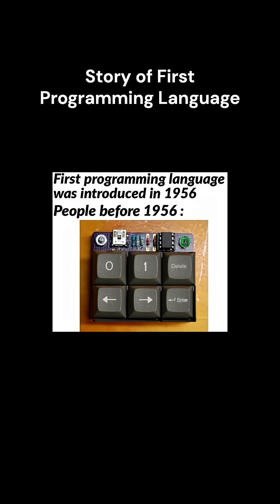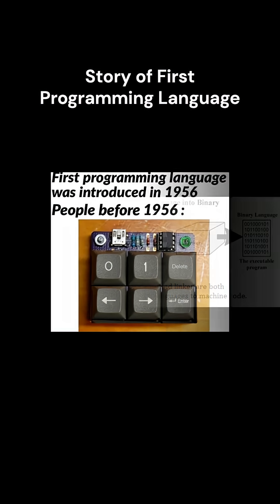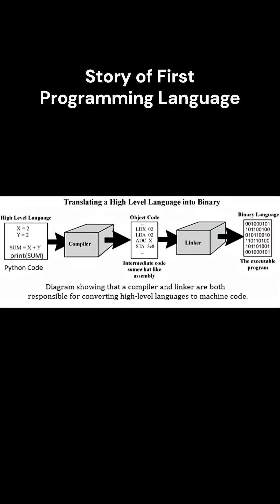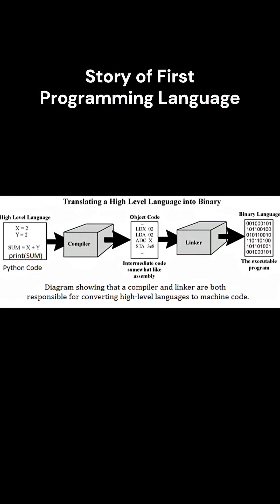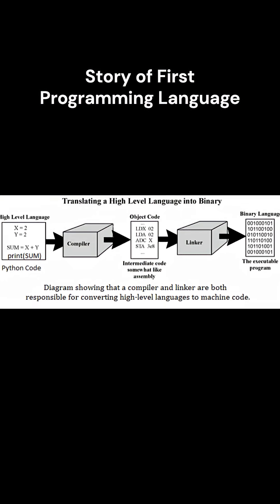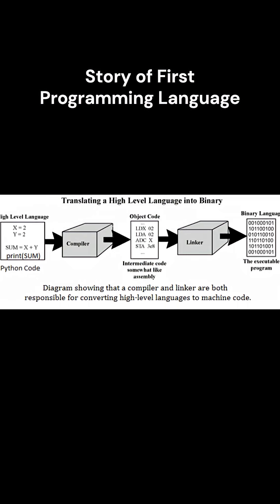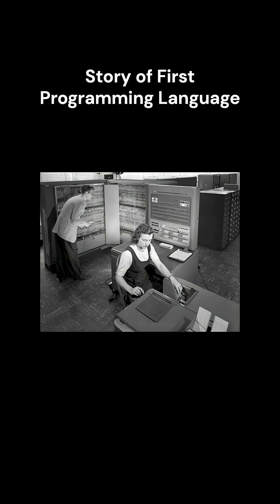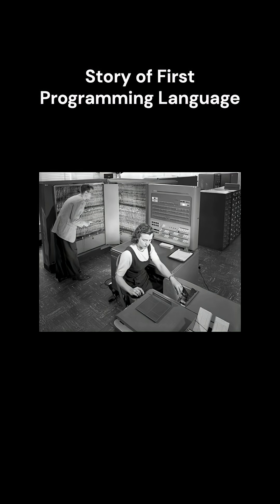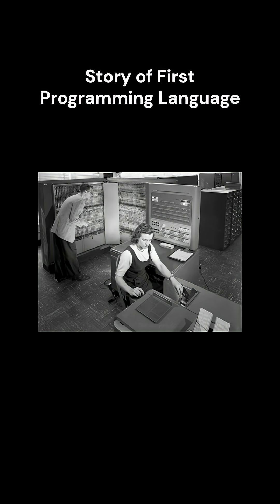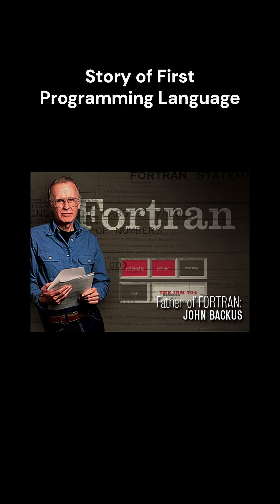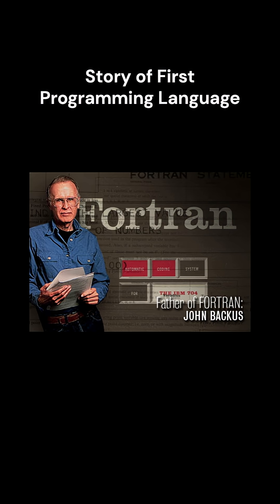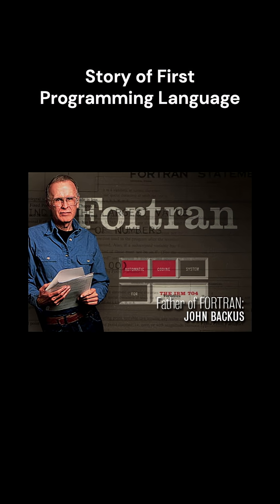Since computers only understand zeros and ones, we need to convert human-readable code to zeros and ones so that the computer understands it. This project eventually became known as FORTRAN, short for Formula Translation.